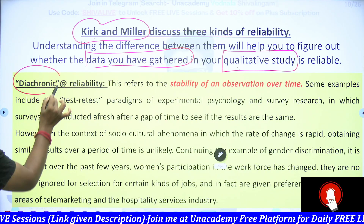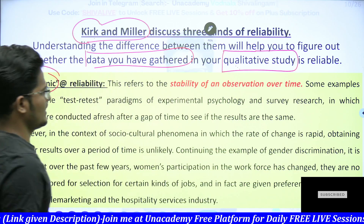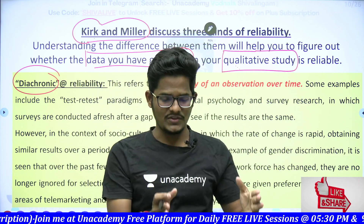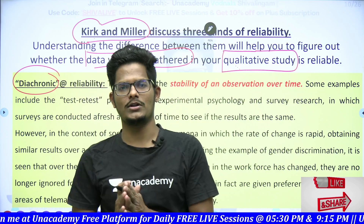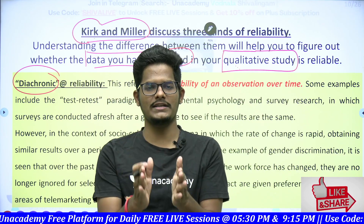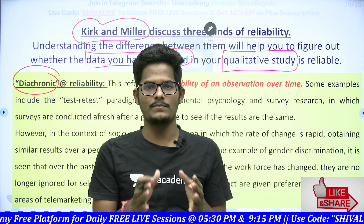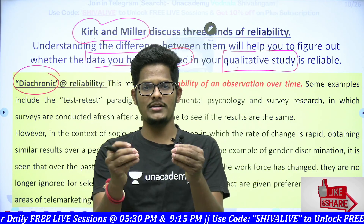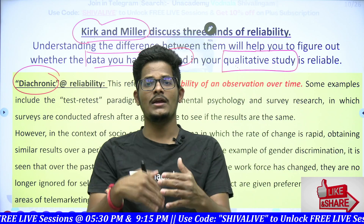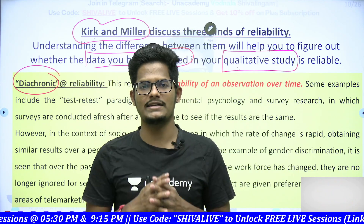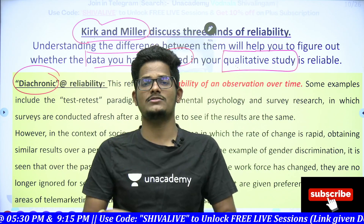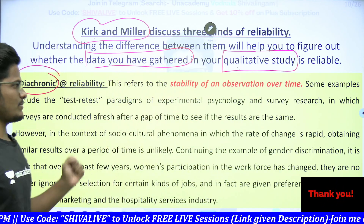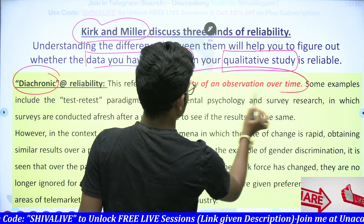The first one is diachronic reliability. To understand this, you first need to understand what reliability means. Reliability means if something is true today, it must be true tomorrow and the day after tomorrow as well. If I perform a test today and get a result, tomorrow it must give the same result, and the day after tomorrow also. If at different points of time, performing a test again and again gives consistent results, that is what we call reliability — it increases people's belief and trust in the outcome of a research. So, diachronic reliability is nothing but the stability of an observation over a period of time.